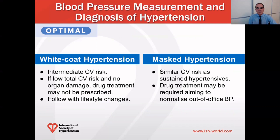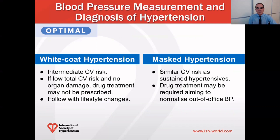For confirmed white coat hypertension, drug treatment is recommended only if total cardiovascular risk is high or there is evidence of organ damage; otherwise, patients should be followed with lifestyle changes. In confirmed masked hypertension, drug treatment may be considered aiming to normalize out-of-office blood pressure.